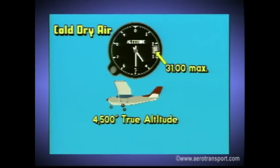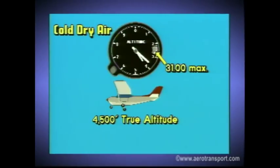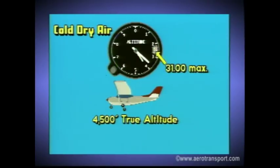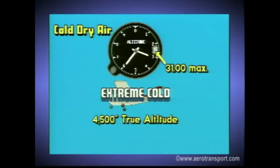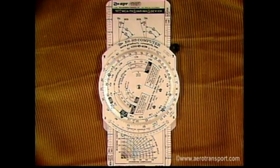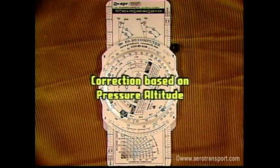In these cases, leave the instrument set at 31 inches. Air traffic control will issue the actual altimeter setting. Because the altimeter is calibrated to indicate true altitude in standard atmospheric conditions, temperature errors can occur. Extremely cold temperatures can produce an altimeter error of as much as 20%. Use your flight computer to correct the temperature error. This correction will be based on pressure altitude, not the indicated altitude.